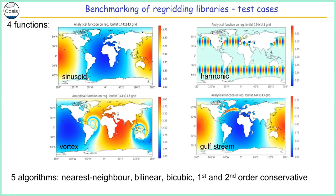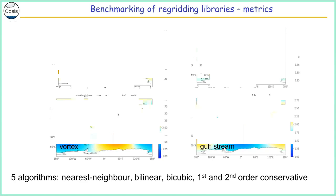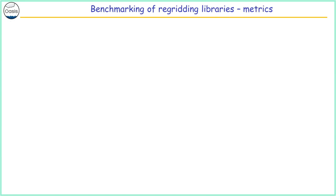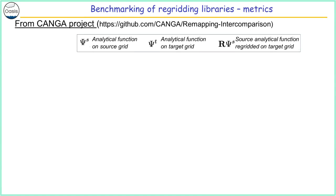We analyzed five different algorithms: nearest neighbor, bilinear or bicubic, second order, and first and second order conservative remapping. That gives us a lot of results, and I will show you a few things that come out.